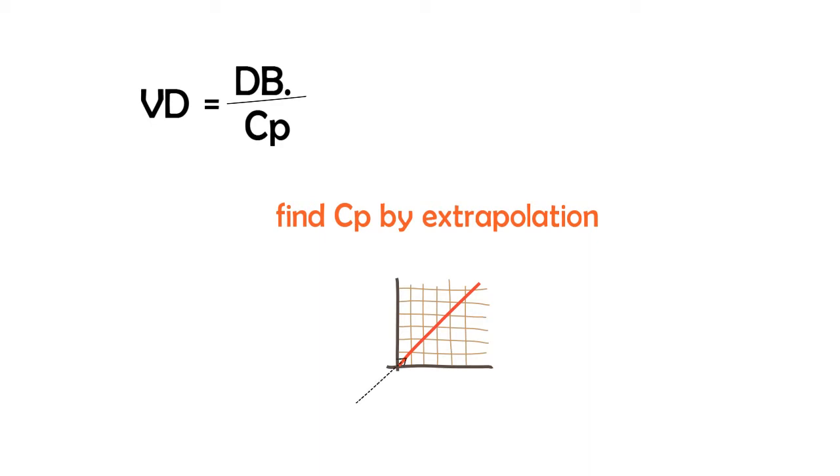When we rearrange this equation that we have, we're taking the drug on the side, and then we have dB is equal to VdCp.